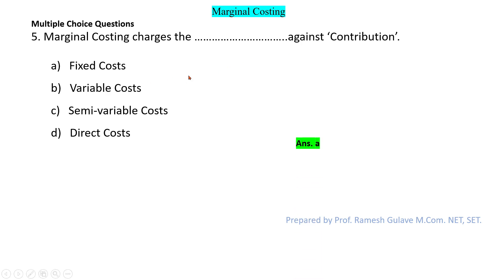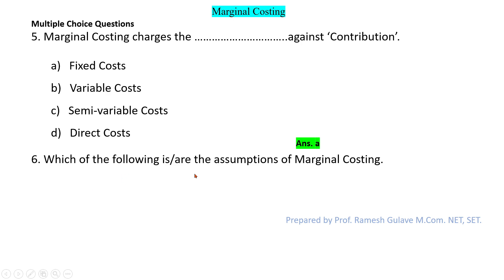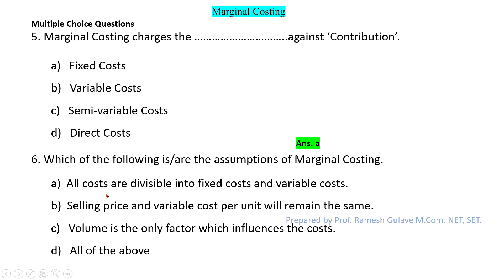The next question asks: which of the following are the assumptions of marginal costing? The first statement is: all costs are divisible into fixed cost and variable cost. In marginal costing, we divide costs as fixed and variable, so this is a valid assumption. The second statement says: selling price and variable cost per unit will remain the same, which is also an assumption of marginal costing.